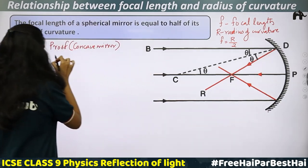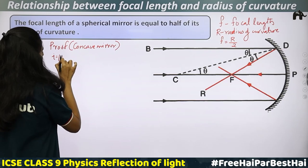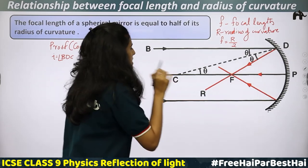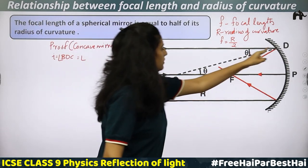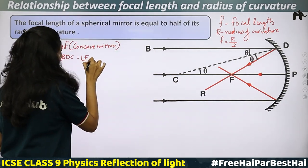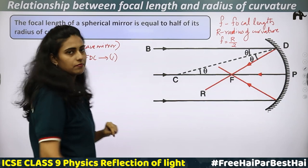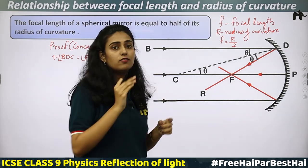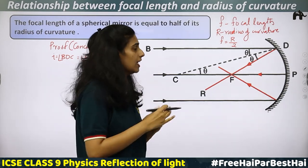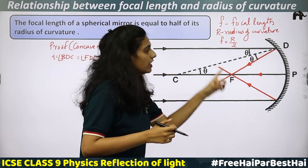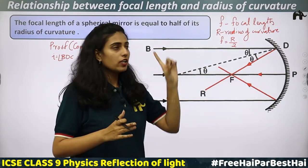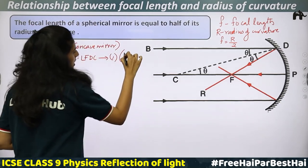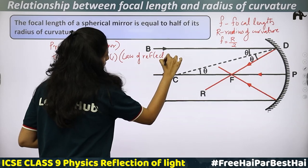Angle theta is the angle of incidence — the angle made between the incident ray and the normal. So angle of incidence I is equal to angle BDC. This angle BDC equals angle FDC. The reason is the law of reflection: angle of incidence is always equal to angle of reflection.